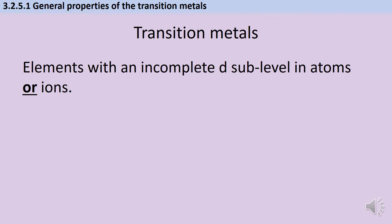Now at GCSE you probably regarded the whole of that central block between group 2 and group 3 as being transition metals. But at A-level we're going to start refining that definition a little bit. Now if you're taking AQA A-level chemistry, we're going to say that the transition metals are all of the elements that have an incomplete d subshell in either their atoms or their ions or usually both.